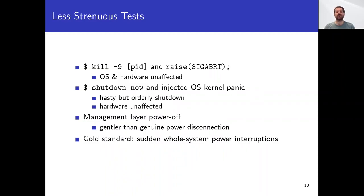It's fine to test against less strenuous kinds of failures — such tests are easier and faster than power cutoffs and may reveal bugs. However, gentler tests do not stress the system like sudden whole-system power interruptions. Killing processes internally or externally is a kind of crash, but it doesn't stress the OS or hardware. Shutting down the kernel is an orderly shutdown even if done in haste, and it doesn't stress the hardware. Some servers feature management interfaces for remote power-down, but this is much gentler than a sudden power cutoff. You should accept no substitutes: test on genuine, sudden, whole-system power interruptions.